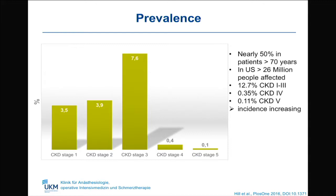As you can see in this diagram, the vast majority of patients suffer from chronic kidney disease stages one, two, and three, whereas stages four and five are rather seldom.